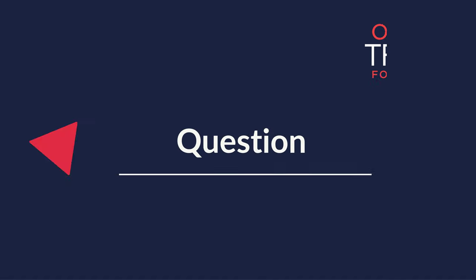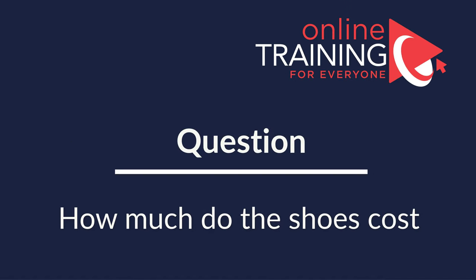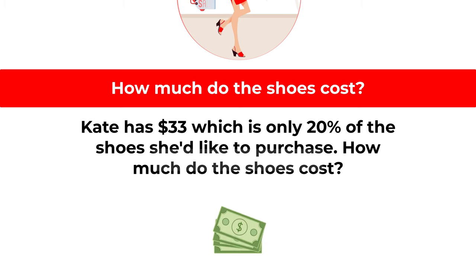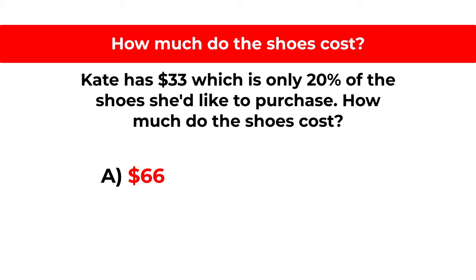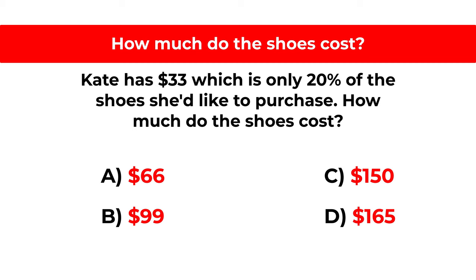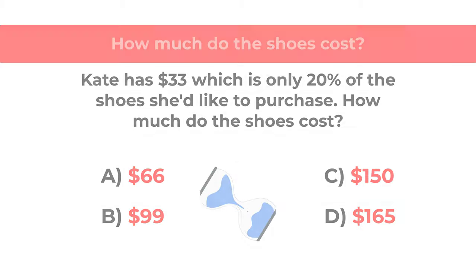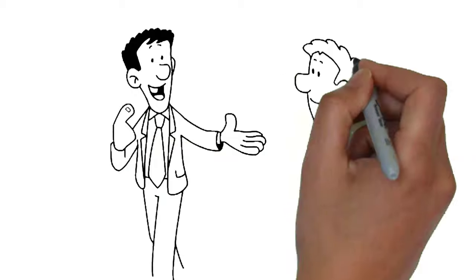Here's a cool question you frequently get on the test. Kate has 33 dollars, which is only 20 percent of the cost of shoes she would like to purchase. How much do the shoes cost? You have four choices: A) $66, B) $99, C) $150, and D) $165. Give yourself 10 to 30 seconds depending on how well you are with math and percentages. Ready or not, let's get to the correct solution together.